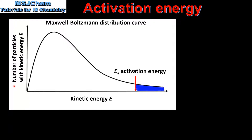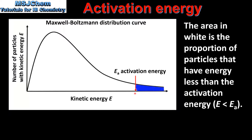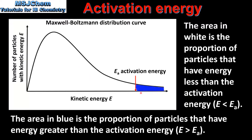Next we look at a Maxwell-Boltzmann distribution curve. On the y-axis we have number of particles with kinetic energy E, and on the x-axis we have kinetic energy. The red arrow indicates the activation energy for the reaction. The area in white is the proportion of particles that have energy less than the activation energy — all these particles do not have enough energy to react. The area in blue is the proportion of particles that have energy greater than the activation energy, so all particles in the blue area have sufficient energy to react.